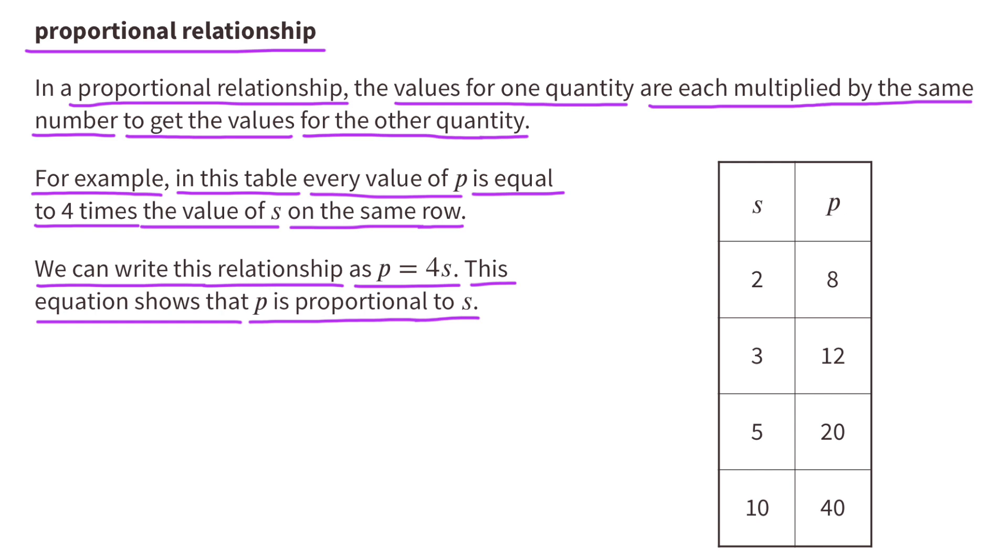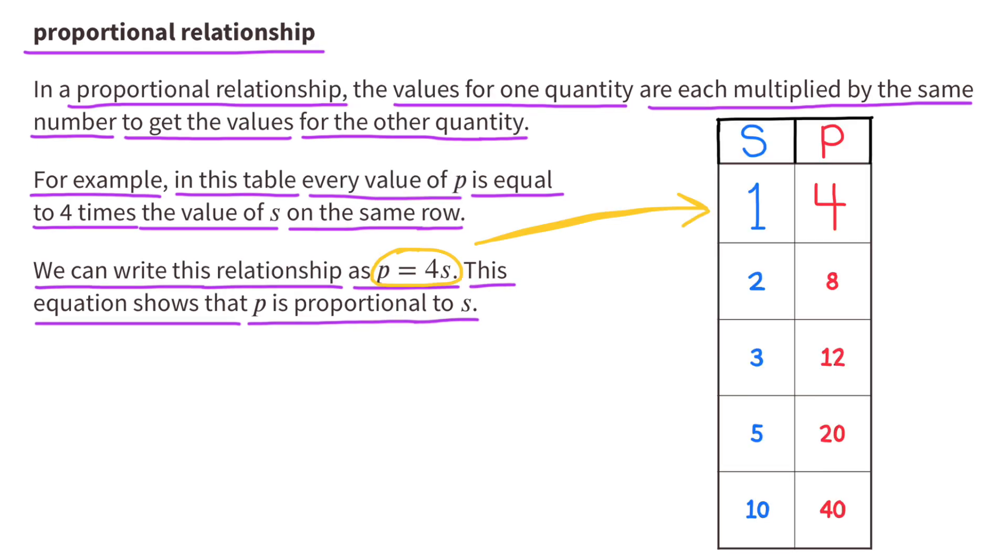For example, in this table, every value of p is equal to 4 times the value of s on the same row. We can write this relationship as p equals 4s, or p equals 4 times s. This equation shows that p is proportional to s.